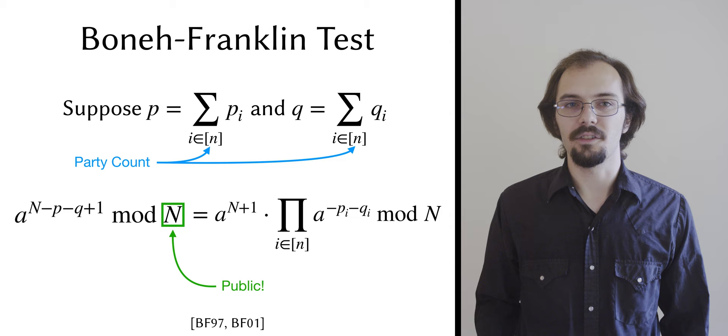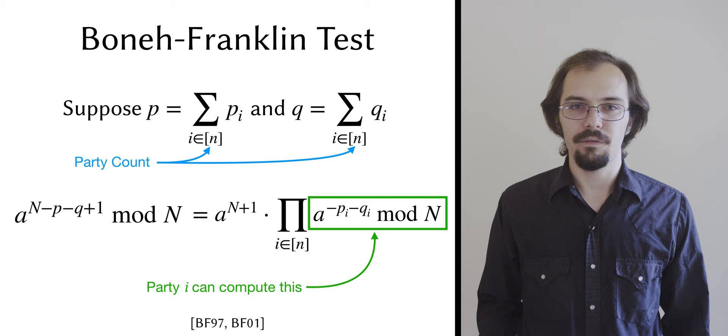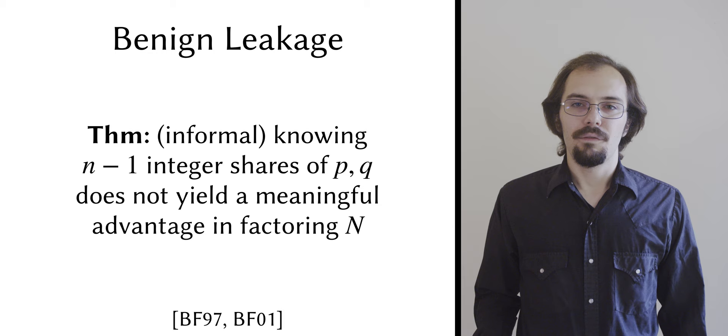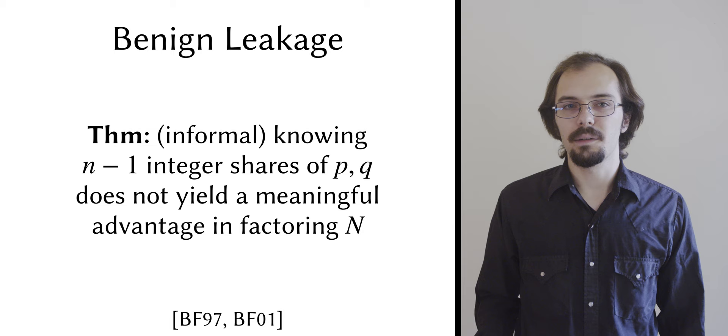This style of sharing is important because it yields a natural method for reconstructing p and q modulo phi of n in the exponent, where phi of n is the order of the multiplicative group modulo n. If you know one or more integer shares of a value, then you know both upper and lower bounds on that value. In other words, integer shares leak some information. Bonet and Franklin provide a proof that this leakage doesn't grant an adversary any meaningful advantage in factoring the biprimes that their protocol produces.